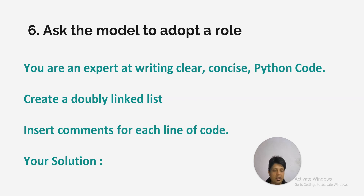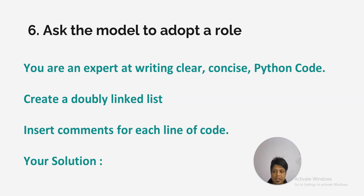A very useful technique is to ask the model to adopt a role. For example, you can say 'you are an expert in writing Python code.' You are assigning a role to ChatGPT as a Python coding expert. Then after giving this role, you can specify: 'create a doubly linked list, insert comments for each line of code' — and then say 'your solution begins now.'